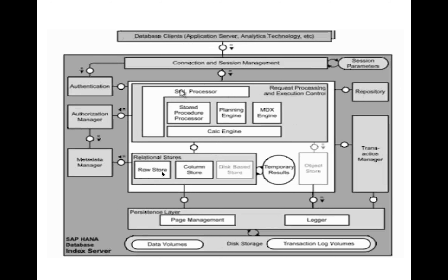SAP HANA as a database also has page management and a logger on the persistence layer. Page management is a database term for how data is stored. The logger keeps a log of all written data to avoid redundant loads. Since all data stored on RAM is volatile, data is backed up to physical disk storage — as data volumes and transaction log volumes — approximately every half minute to one minute. This ensures data can be recovered in case of power or system failure.